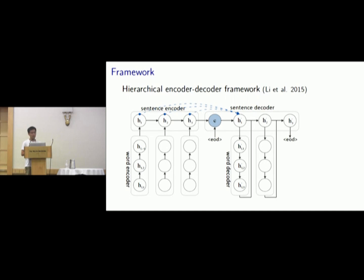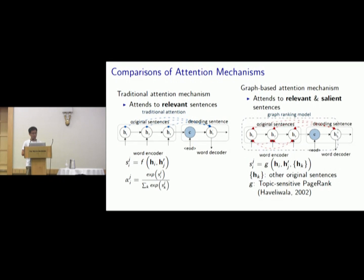We adopt a hierarchical encoder framework that uses a word encoder to encode each sentence into sentence embeddings and a sentence encoder to encode sentence embeddings into a document embedding. And for generation, a sentence decoder is used to produce sentence embeddings and a word decoder is used to generate every sentence. Traditional attention mechanism used in the hierarchical framework is to attend to original sentences that are relevant to the decoding sentence. So the attention score of a sentence is based on the relationship between the original sentence and the decoding sentence.